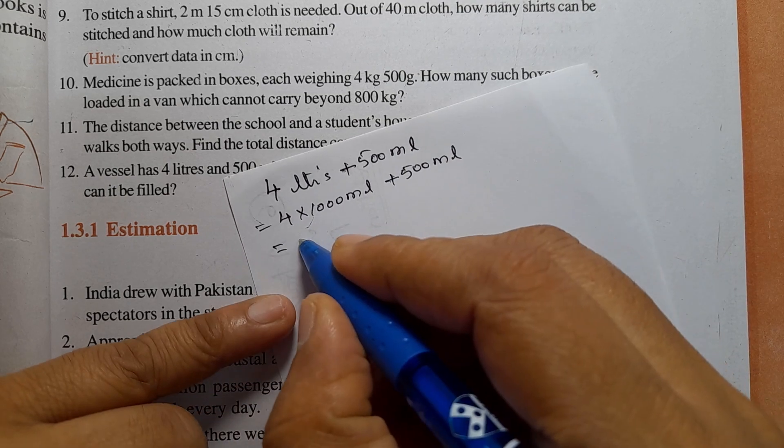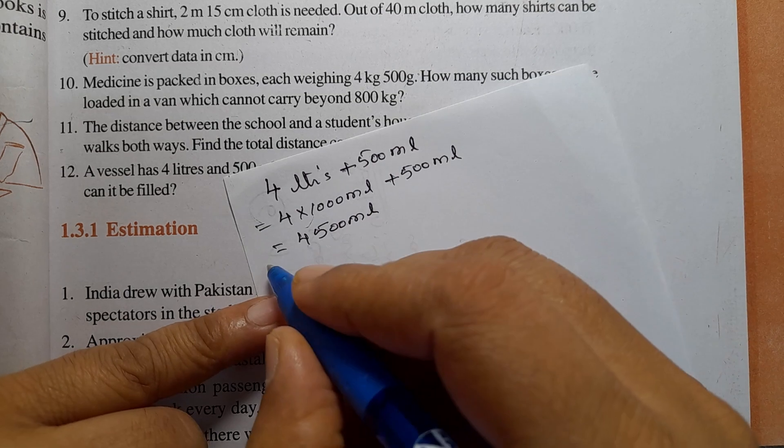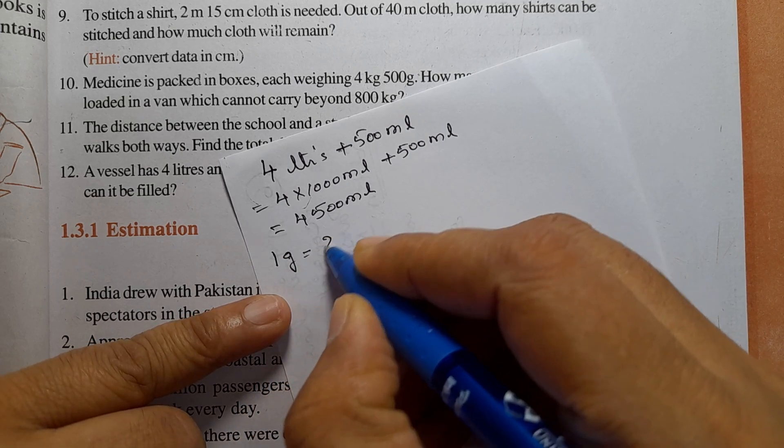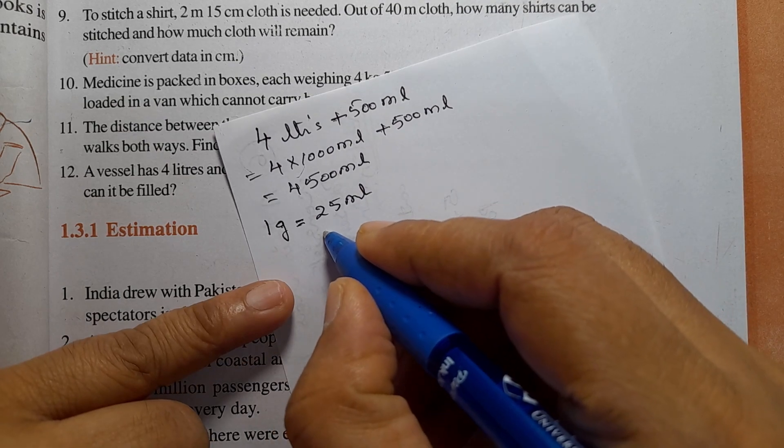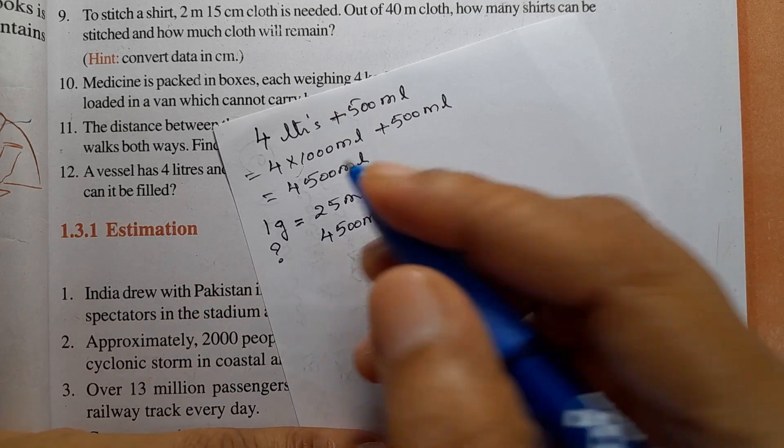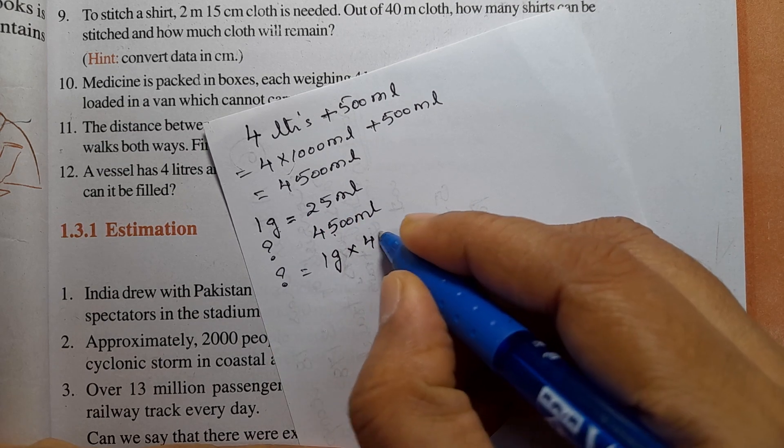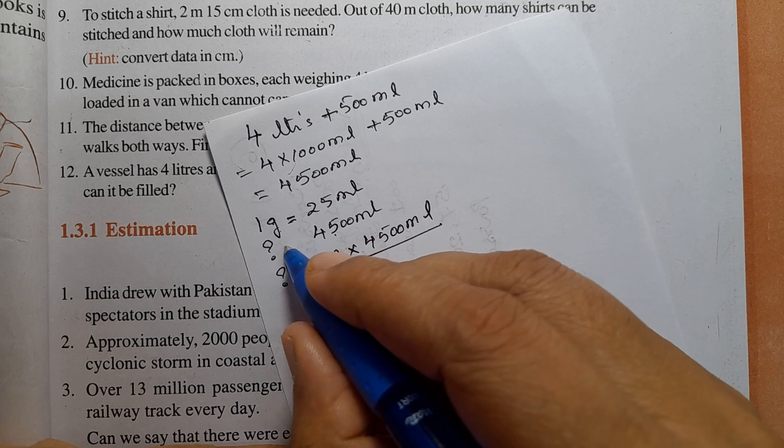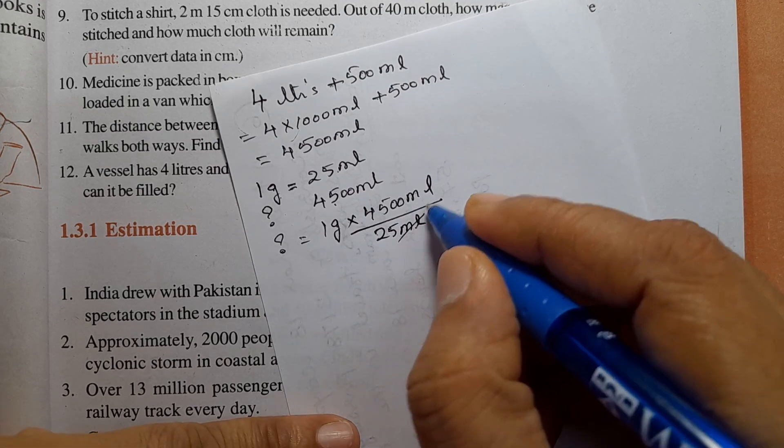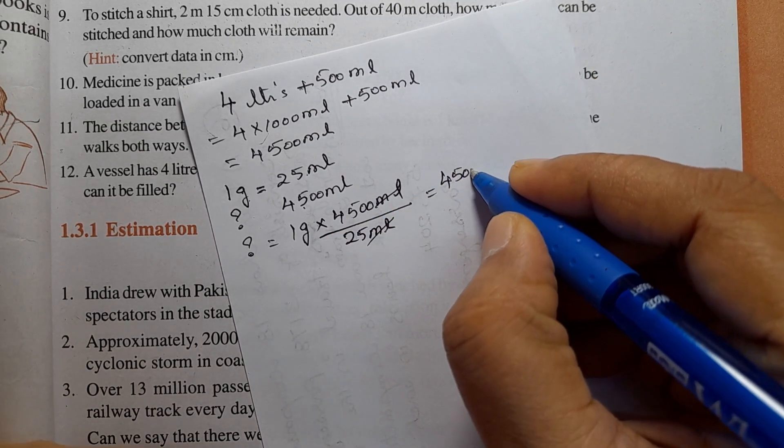So, we convert 1000 ml per liter: 1000 ml, 2000 ml, 3000 ml, 4000 ml. The ml units cancel. So we have 4500 ml total.